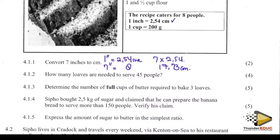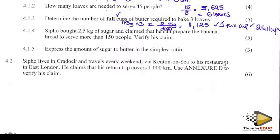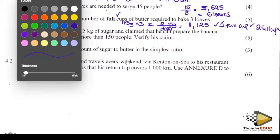We are told there are 25 kilograms of sugar, and the person claims this can prepare banana bread to serve more than 150 people. That's the claim — let's see if it's valid.